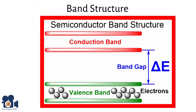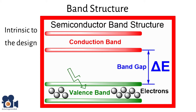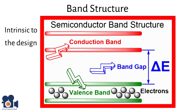Semiconductors' properties are made possible via a band structure that is intrinsic to their design. Electrons are divided into bands: the valence band is filled with electrons while the conduction band is typically empty. The energy gap between these bands is known as the band gap.